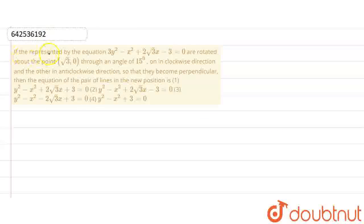So, here we have a question. If the lines represented by the equation 3y² - x² + 2√3x - 3 = 0 are rotated about the point (√3, 0) through an angle of 15 degrees, one in clockwise direction and the other in anticlockwise direction, so that they become perpendicular, then the equation of pair of lines in new position is? I have given my equation that is 3y² - x² + 2√3x - 3 = 0. I will factorize it. Then I will get (√3y - x + √3)(√3y + x - √3) = 0.